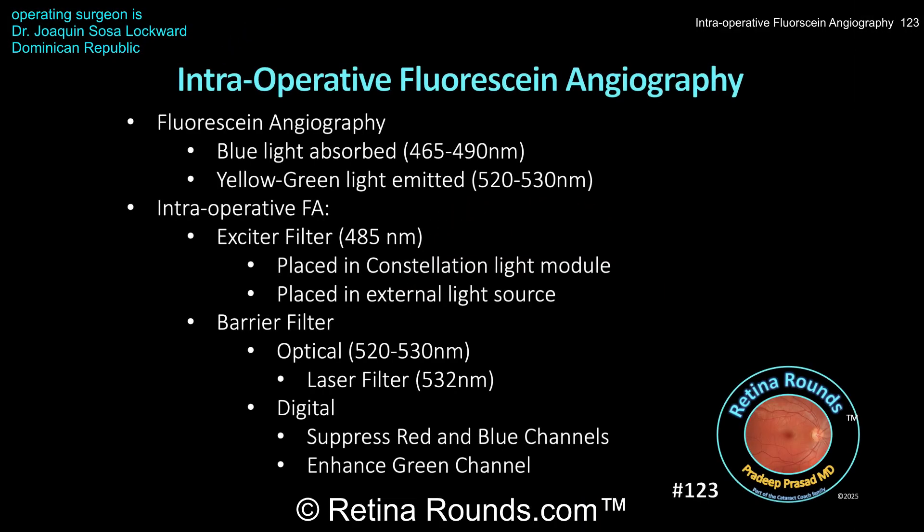Let's start our discussion by going over the basics of fluorescein angiography. Fluorescein absorbs blue light in the 465 to 490 nanometer spectrum and emits yellow-green light in the 520 to 530 nanometer spectrum. So for optimal visualization, we want an exciter bandpass filter that delivers blue light and a barrier bandpass filter that preferentially allows us to see only the emitted yellow-green light.